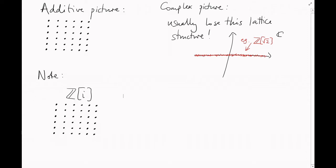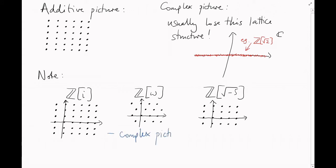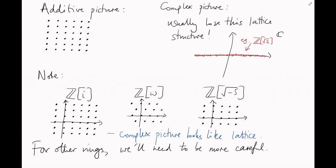Notice that most of my examples so far, like Z i, Z omega, Z root minus 5, have been conveniently chosen so that the lattice picture and the complex picture look very similar. For other rings, we'll need to be a little bit more careful, and it's going to come down to the following.